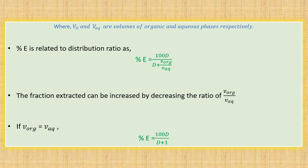Suppose V_organic equals V_aqueous — for example, both are 50 mL or 100 mL. Then they cancel out and give 1, so the equation simplifies to: percentage extraction equals 100D divided by (D plus 1). To increase the fraction of extraction, the ratio of volume of organic phase to volume of aqueous phase should be decreased.